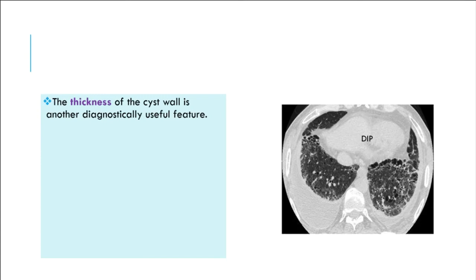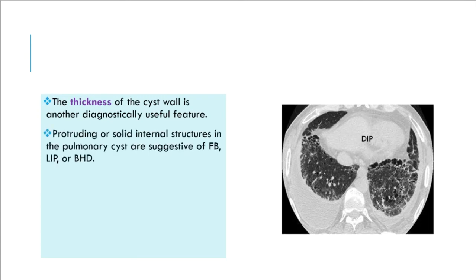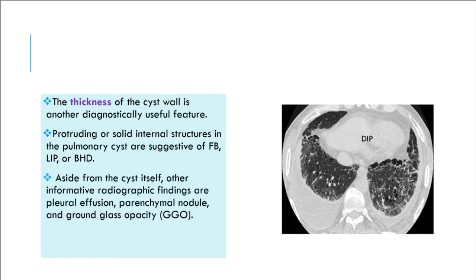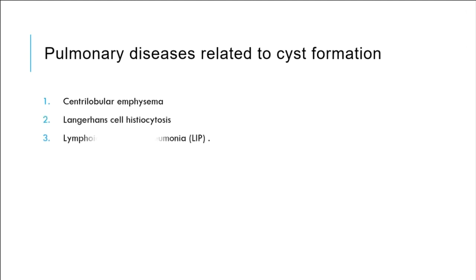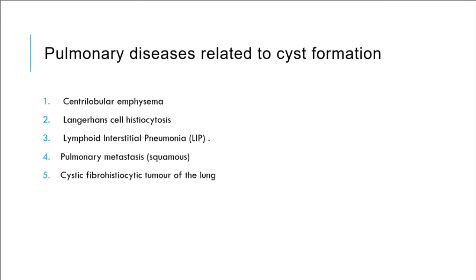The thickness of the cyst wall is another diagnostically useful feature. Protruding or solid internal structures in the pulmonary cyst are suggestive of follicular bronchiolitis, LIP, or BHD. Aside from the cyst itself, other informative radiographic findings include pleural effusion, parenchymal nodule, and ground glass opacity (GGO). Pulmonary diseases related to cyst formation include centrilobular emphysema, Langerhans cell histiocytosis, lymphoid interstitial pneumonia (LIP), pulmonary metastasis (squamous), and cystic fibrohistiocytic tumor of the lung.